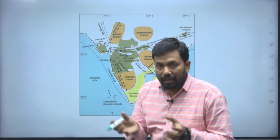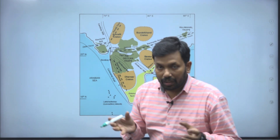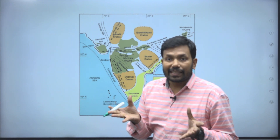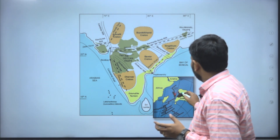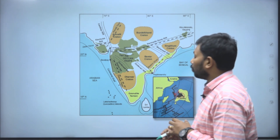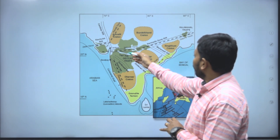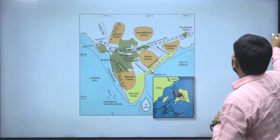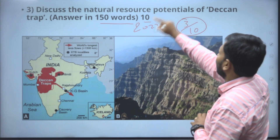All the magma that came out was basaltic magma — a basic magma. You can discuss how the magma further extended with more and more eruptions over time. You can draw this diagram. Now concentrate on the question: discuss the natural resource potential of Deccan Trap.